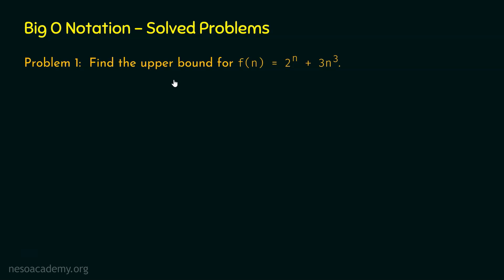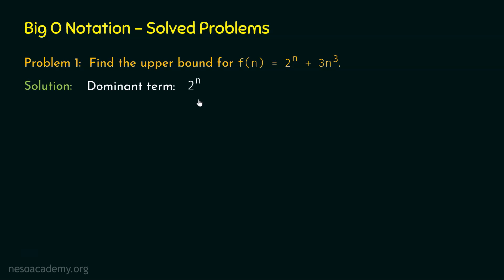Step number 1 is to find the dominant term in this expression equal to F(n). The dominant term is 2 to the power n because 2 to the power n is greater than 3n cubed. If you want to verify this, try plugging in different values of n in 2 to the power n and 3n cubed. You will identify that after some point, 2 to the power n will surpass 3n cubed. So clearly, 2 to the power n is the dominant term.